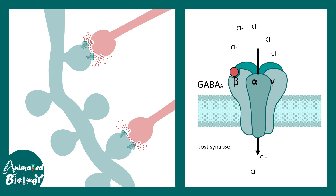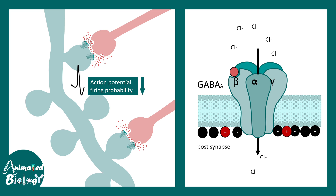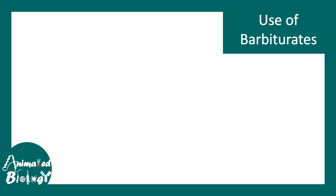In both cases, the result of chloride influx inside the cell is making the inside more negative. If the inside is more negative, it becomes harder for any downstream neuron to fire an action potential, thereby decreasing overall neuronal activity. This is how benzodiazepines and barbiturates work.